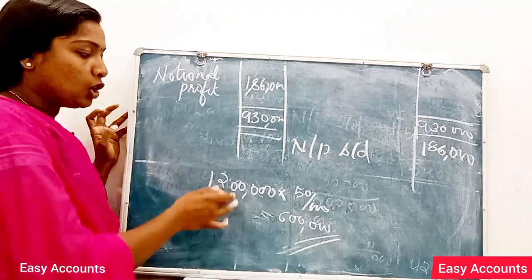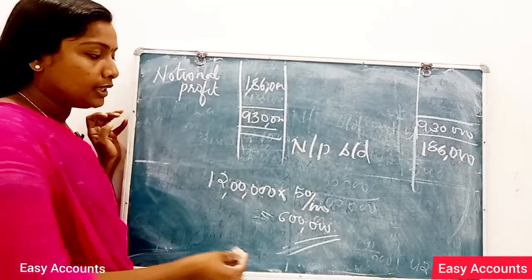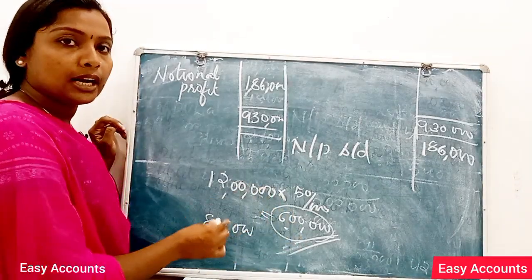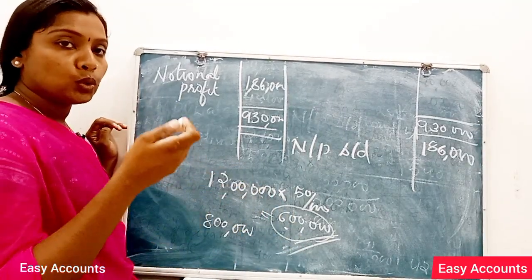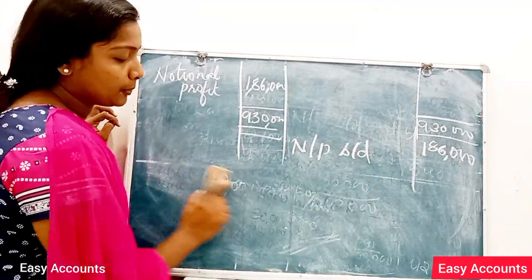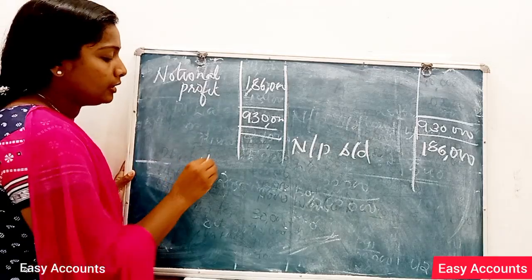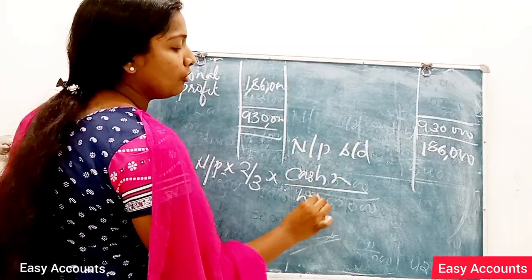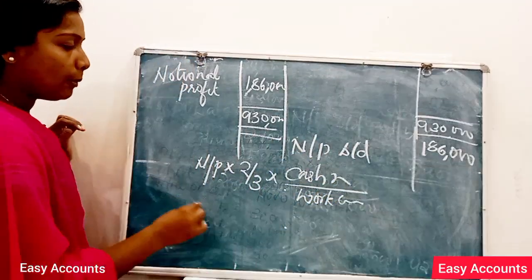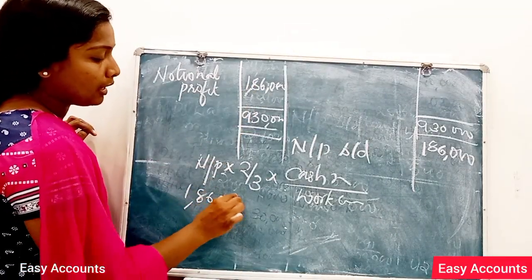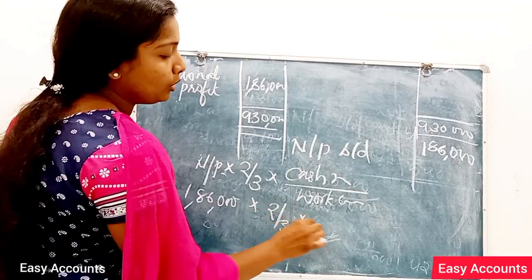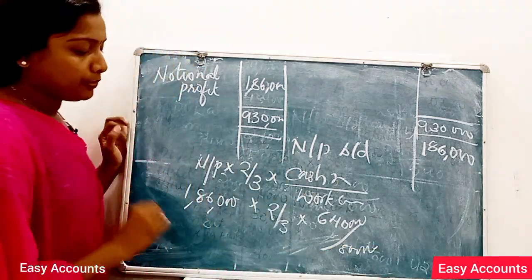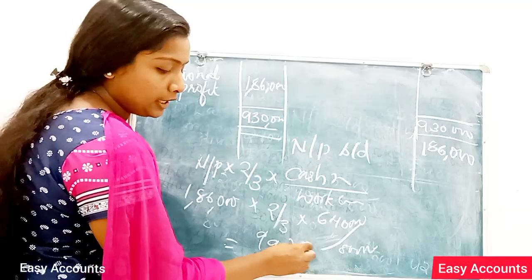If you give your contract price, then you will pay less. Then, let's go back to the next step: Notional Profit into 2 by 3 into Cash Received by Work Certified. So, how do we get the profit? 1,56 into 2 by 3 into 6,5 divided by 8. Then, we get the profit.